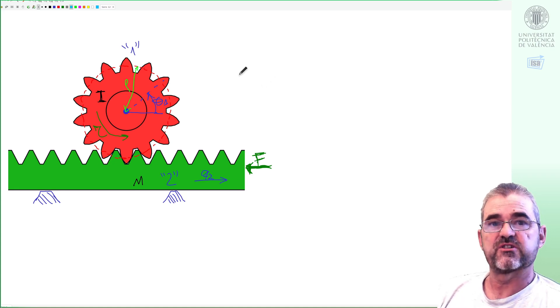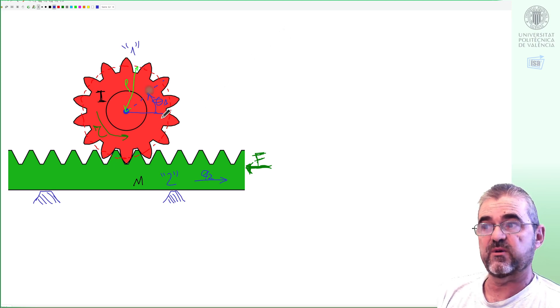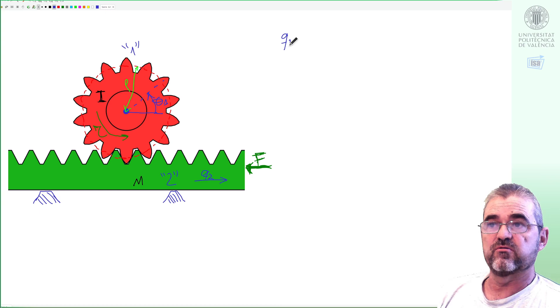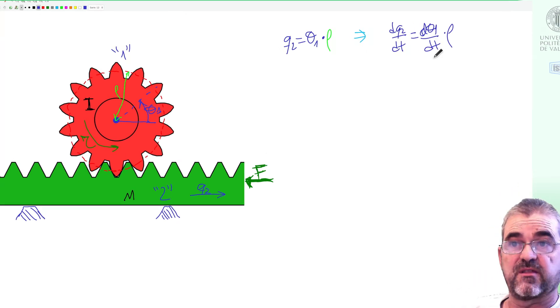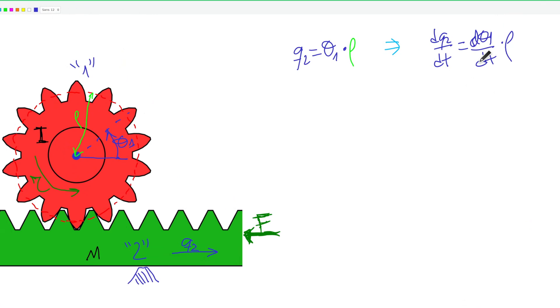Let's discuss which equations we can write for this system. First we are going to write the kinematics, the mechanical constraint saying that if we denote the angle of rotation theta 1 and we denote as q2 the horizontal displacement of the green element, then q2 is theta 1 times the radius rho. Of course this equation can be equivalently written as this kinematic constraint in velocities, and we will consider these two equations to be the same.